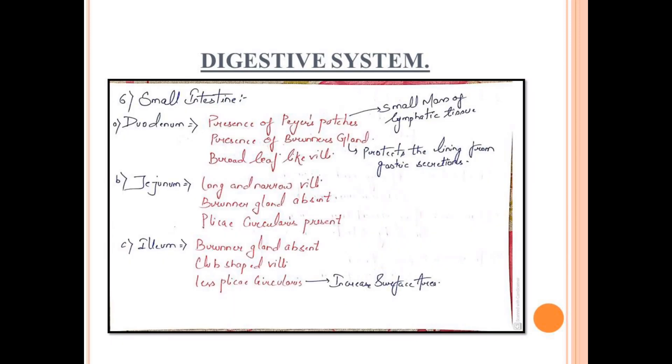Talking about the next component or organ, the small intestine. Small intestine has three parts: duodenum, jejunum, and ileum. Duodenum has Peyer's patches. Peyer's patches are lymphatic tissues that are aggregated in a mass. This function is immune function, helping the immune system.